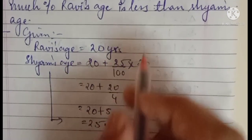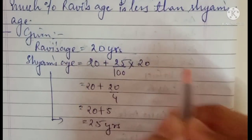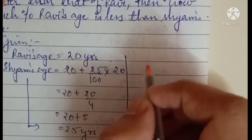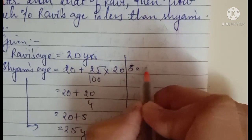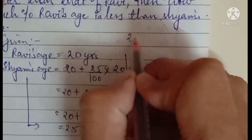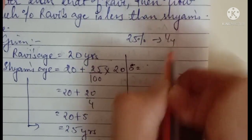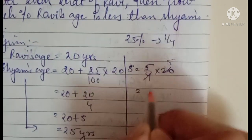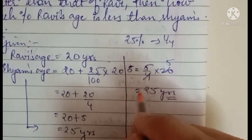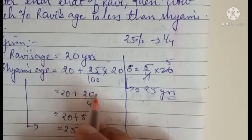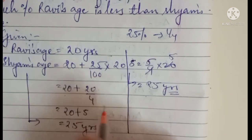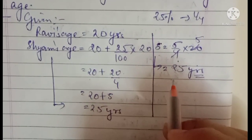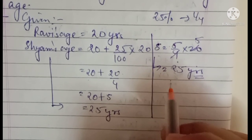Now let me show the shortcut. You don't need to write all those steps in the exam. As I told in my previous lecture, 25% means 1/4, so 25% more means 5/4. Therefore, Shyam's age is 5/4 of 20, which equals 25. Whenever the question says 'greater than,' you write 5/4.